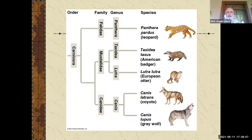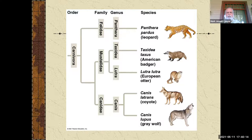Here is the way we do this. These are all carnivores, found in the order Carnivora. The cat family would be Felidae, and then we have Mustelidae, which includes badgers, otters, and weasels. The canids would be the dog-like species. What we're trying to do is look for how closely related they are.